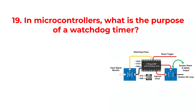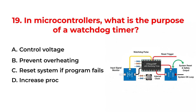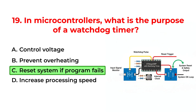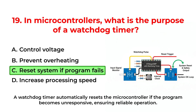In microcontrollers, what is the purpose of a watchdog timer? A. Control voltage. B. Prevent overheating. C. Reset system if program fails. D. Increase processing speed. The correct answer is Option C: Reset system if program fails. A watchdog timer automatically resets the microcontroller if the program becomes unresponsive, ensuring reliable operation.